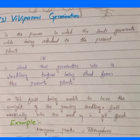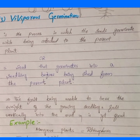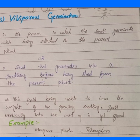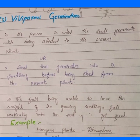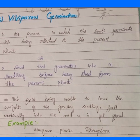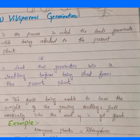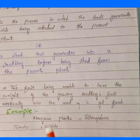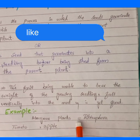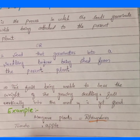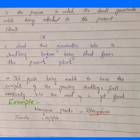Once the seed starts germination and becomes a seedling, the fruit becomes unable to bear the weight of the growing seedling and falls vertically into the mud, where it gets fixed. Viviparous germination mostly occurs in mangrove plants — for example, Rhizophora — and in rare cases in tomato and apple.